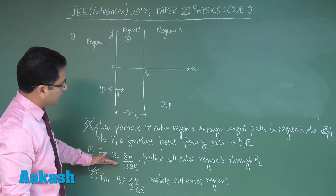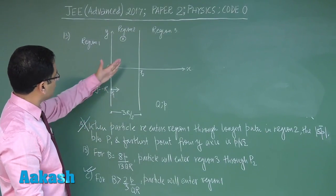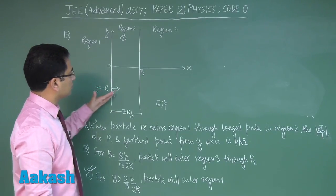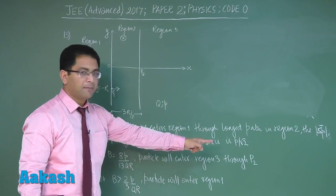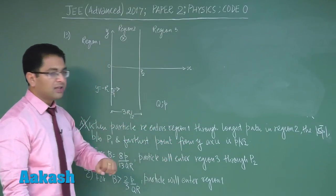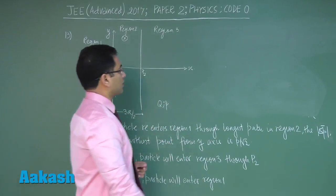But for this particular value it's very clear the particle will not come into region 1, it would rather go here. So particle will enter region 3, that's correct. But we need to verify whether it goes through p2 or not.